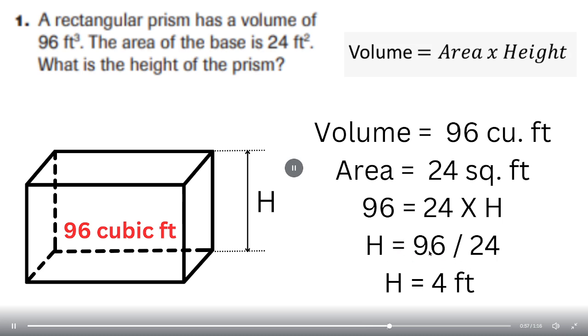When you calculate 96 by 24, you get 4 feet. So that will be the height of the rectangular prism.